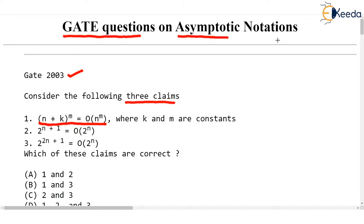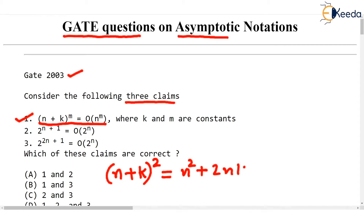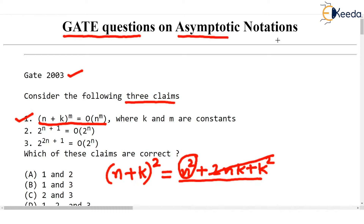Of course this claim is correct. They have given that k and m are constants. If n + k, where k is a constant, is raised to 2 (m = 2), expanding gives n² + 2nk + k². This is a polynomial in n of degree 2. So we drop the lower terms as we do in O notation and say (n + k)² is O(n²).